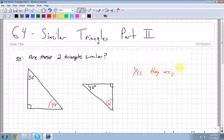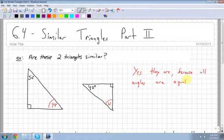And the reason they're similar is because all angles are equal. And that's the only thing we're looking for when we're trying to check to see if two objects are similar.